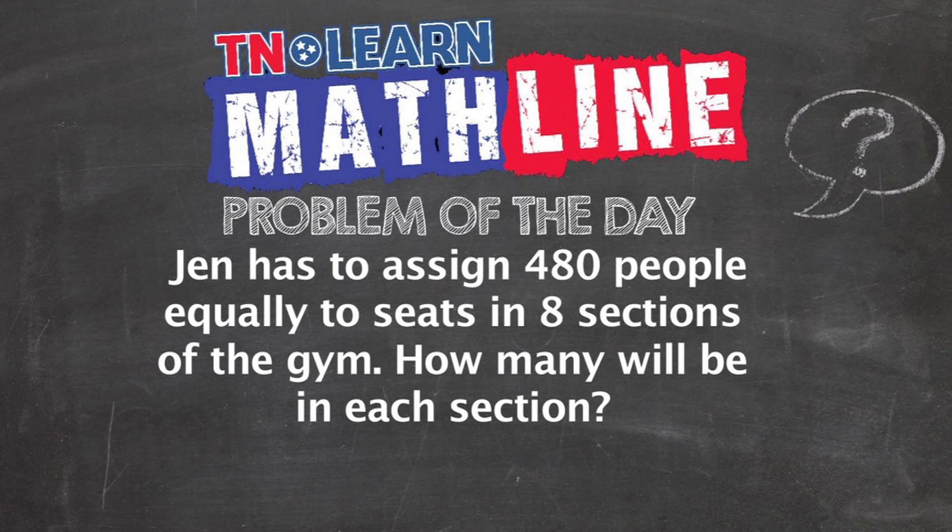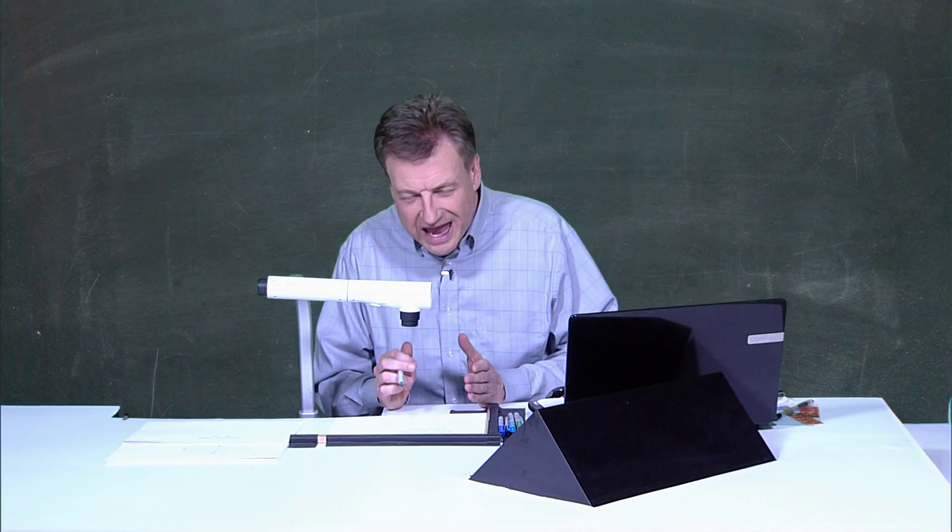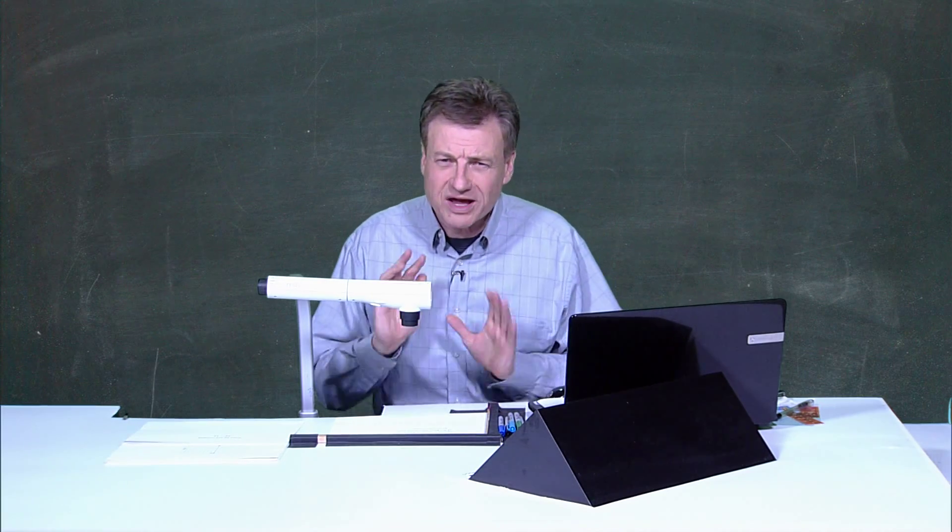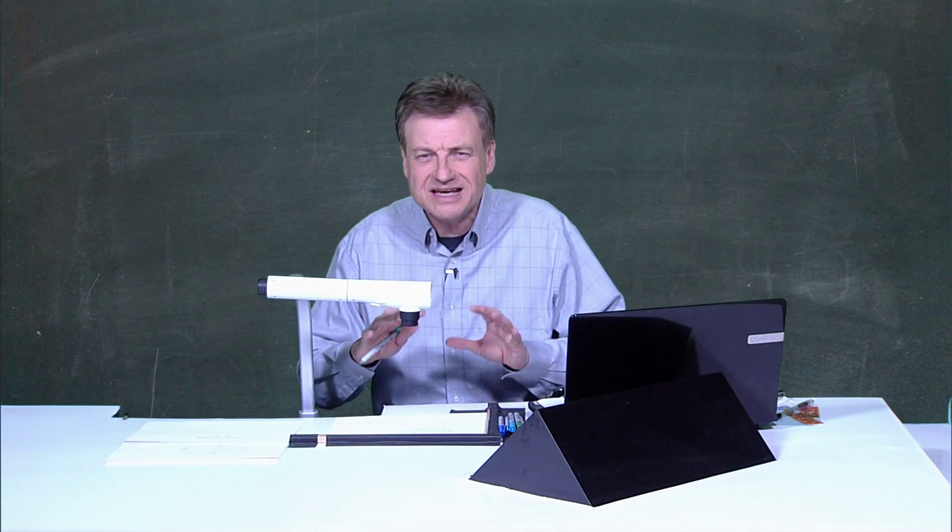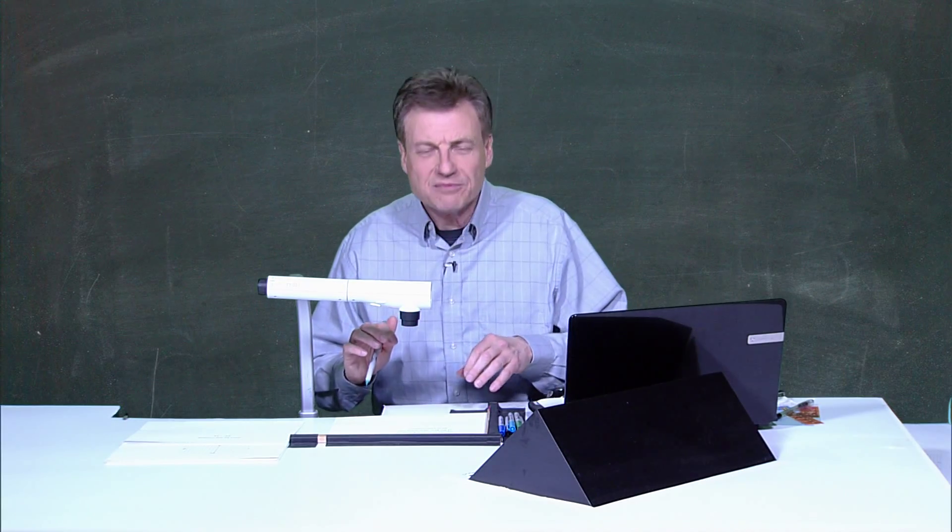Alright, we're going to try to do that equally. So Jen, you've got 480 people. That's a lot of people, and you've got to organize them out because you want them all basically in the same amount per section.